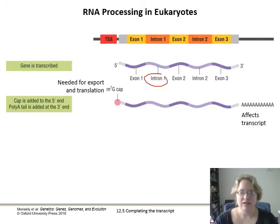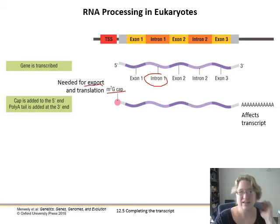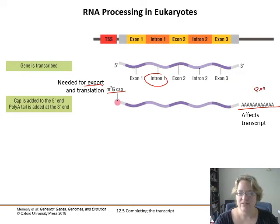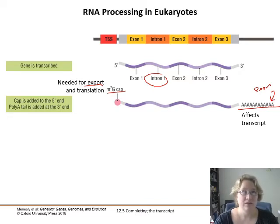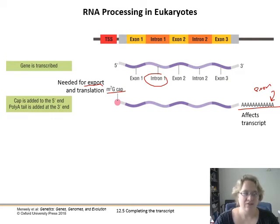First, what we need is a cap. On the five prime end, we want this methylated cap, which is literally needed for export outside the nucleus — the nuclear pores prevent mRNA that does not have this cap from leaving. And then we have this poly-A tail, which helps because there are exonucleases that will try and chop at the end of unprotected nucleic acid floating around the cell, because that's what viral DNA is.